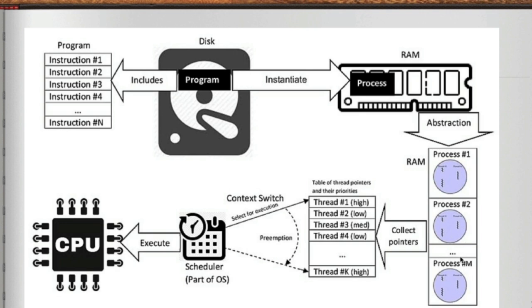Process 1, Process 2, up to Process M. They have the pointers. They have collect pointers, the thread 1, thread 2 and so on. And they all have different priority levels. This is where the context switching happens from one process to another. CPU is assigned from one process to another.